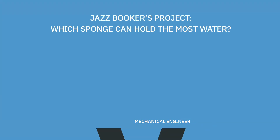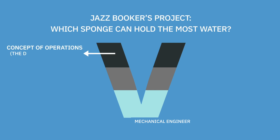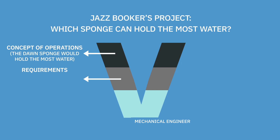I'm going to give you a small example. Jazz Booker is a fifth grade student at Tolles Montessori School in Fort Wade, Indiana. Jazz's project: which sponge can hold the most water? Jazz did his concept of operation and included his hypothesis — what he thought would happen. He thought the Dawn sponge would hold the most water. He then wrote requirements: must have water, must have bowls to hold the water, must measure the water before and after putting it in the bowl.